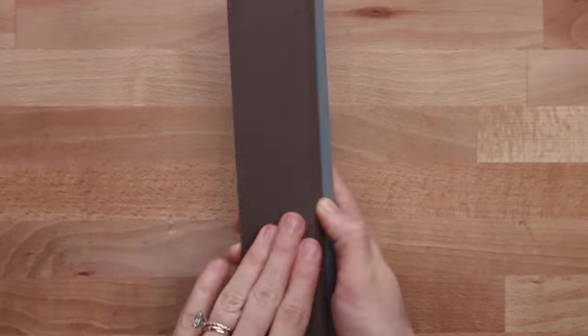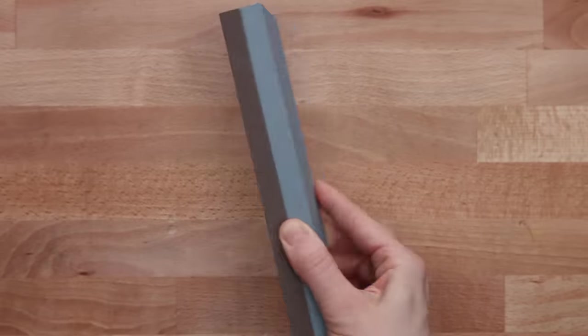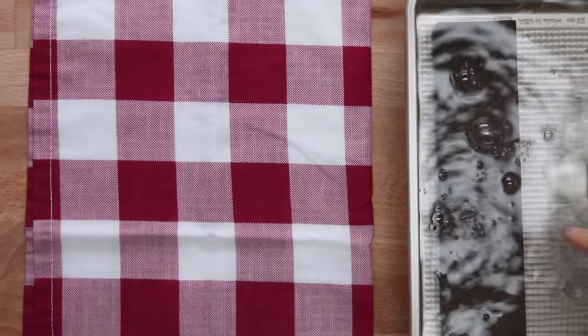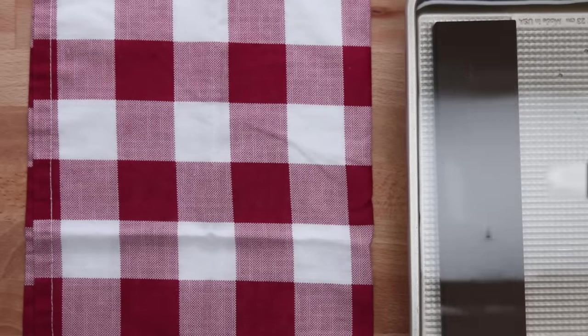And just like the other tool, you have a coarse side and a fine side. Again, you're going to want to start on the coarse side. First things first, we have to get it wet. So you just want to soak it pretty much until all the little bubbles disappear and it's completely saturated with water.